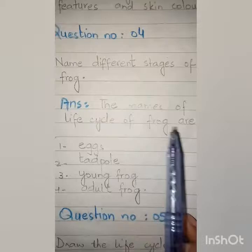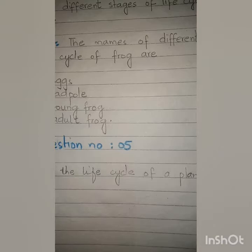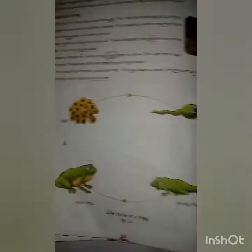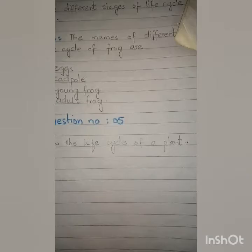Question number five: Draw the life cycle of a plant. You need to draw the life cycle of a mustard plant. It is in your book — open page number 15. This is the life cycle of the mustard plant. You have to draw this life cycle on your white page, and write the question on the lined page.